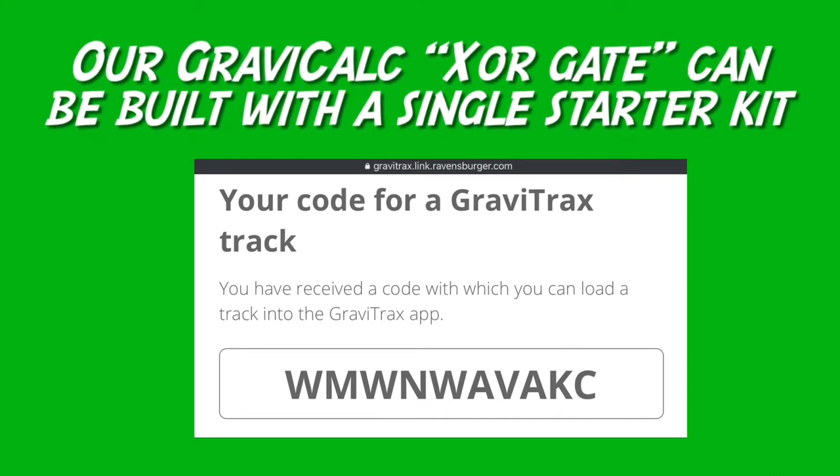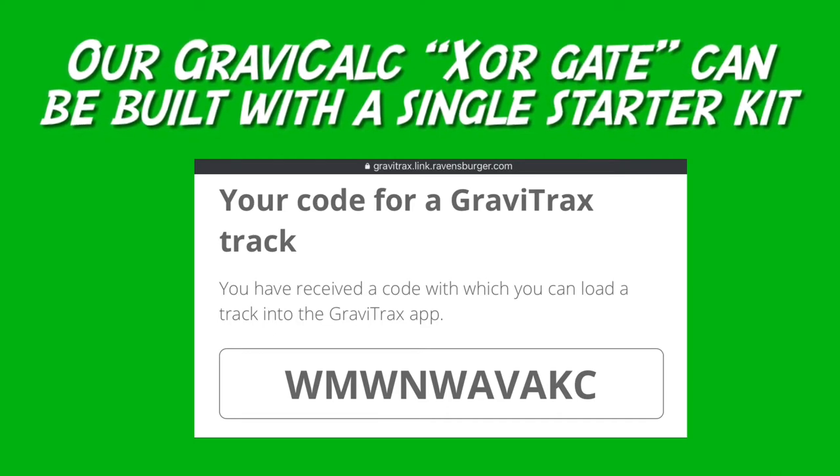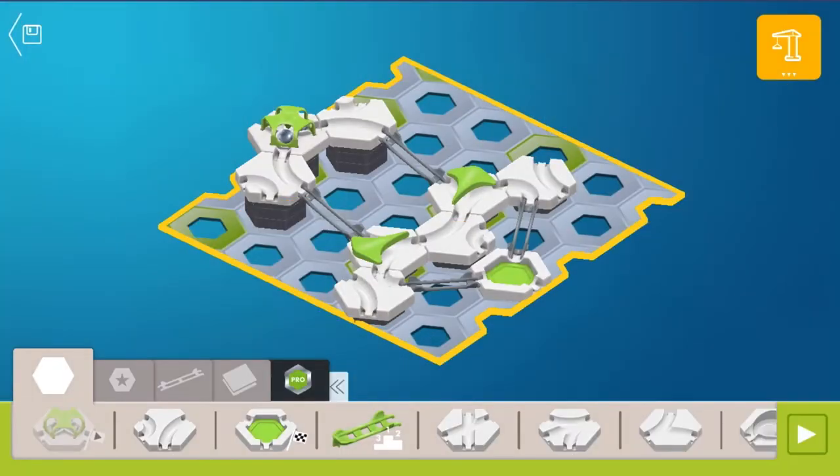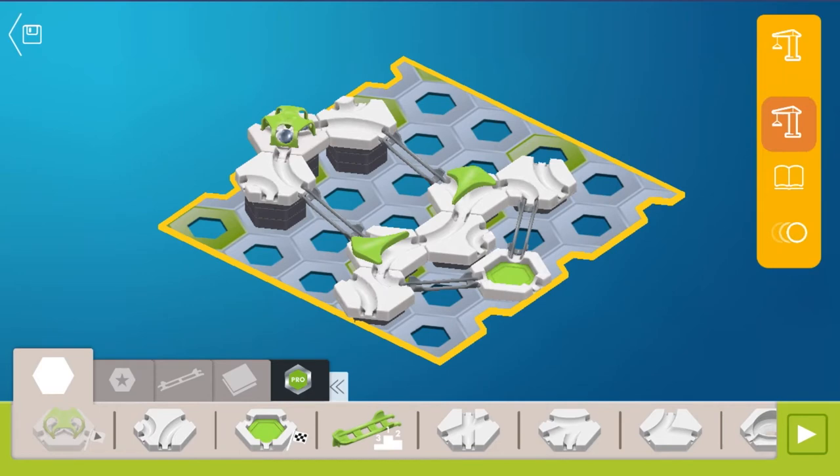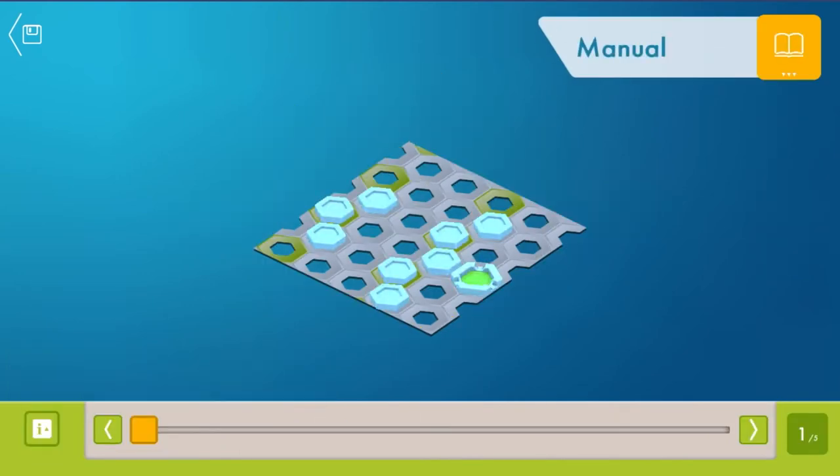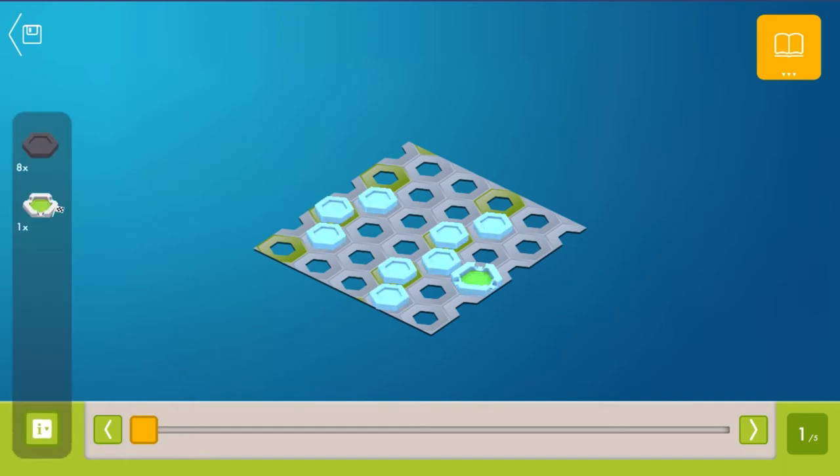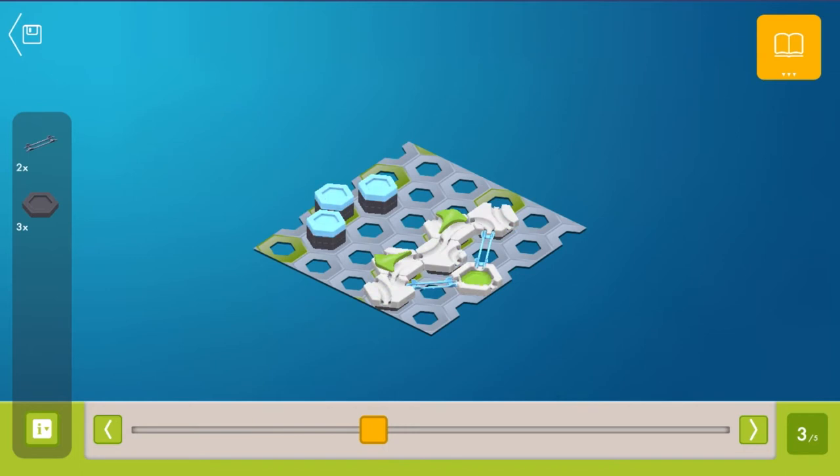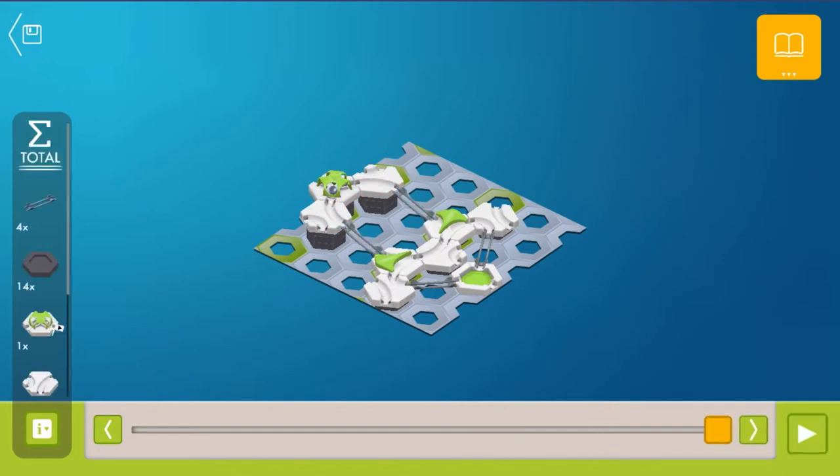The free Ravensburger GraviTrax app will give you step-by-step build instructions. Just switch the app from construction mode to manual mode. Now, if you don't own a GraviTrax set, you can participate anyway by running the track simulation in the app. When you build the track, make sure all the switches are in the correct starting position or you won't get a correct result. And after running a track, you'll need to reset those switches back to their starting position before you run the track again.